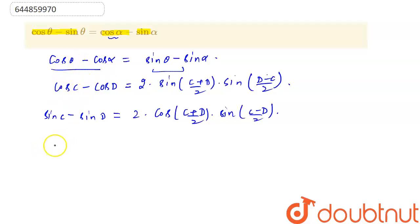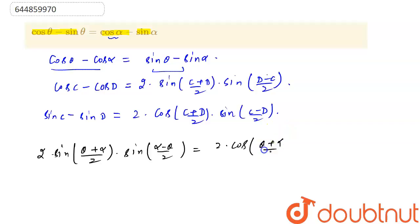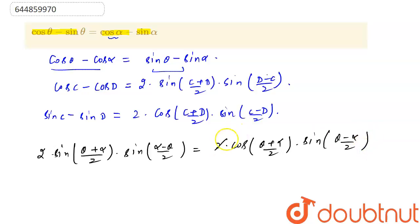So we will use these formulas to solve this. cos C - cos D gives us 2 sin((θ+α)/2) · sin((α-θ)/2), equal to 2 cos((θ+α)/2) · sin((θ-α)/2).